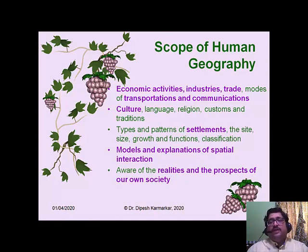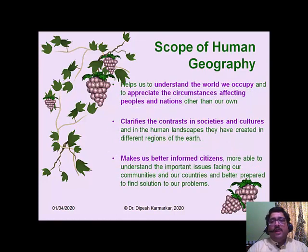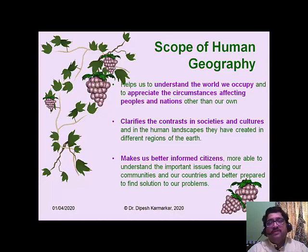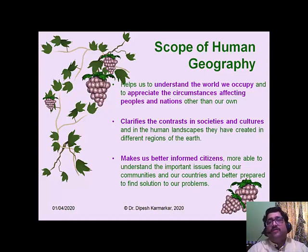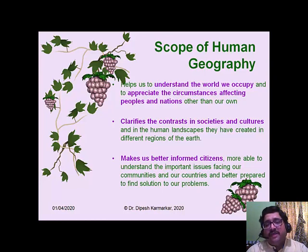In all, human geography helps us to understand the world that we occupy and to appreciate the circumstances affecting peoples and nations other than our own. In human geography, we don't study only our own region or society — we study the societies and regions of others as well. Human geography also helps us understand the contrasts and differences between and among societies and regions, because human-environment relationships differ from one region to another. This makes us better, better-informed citizens.